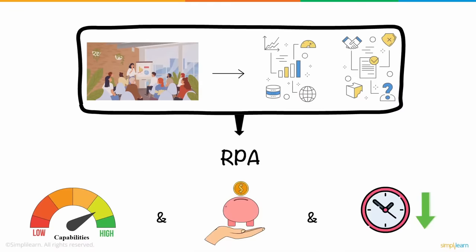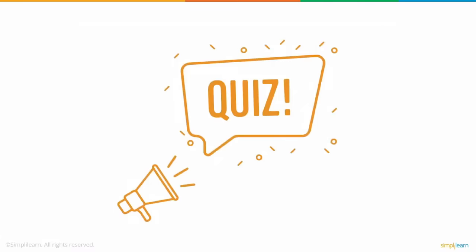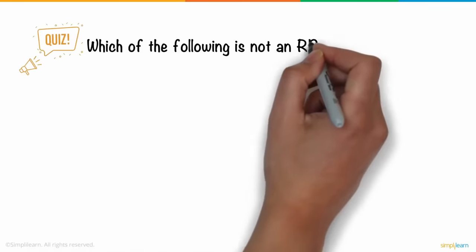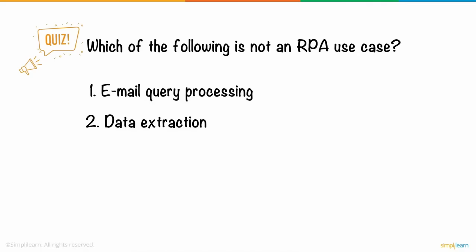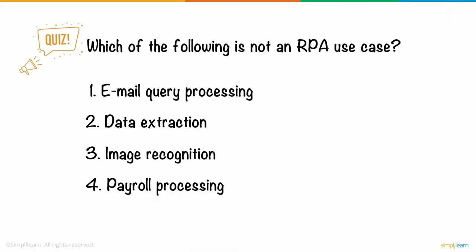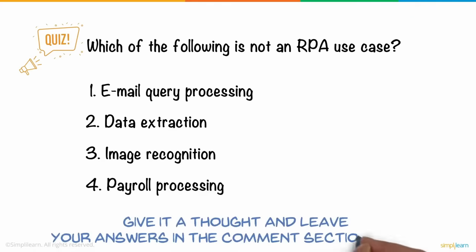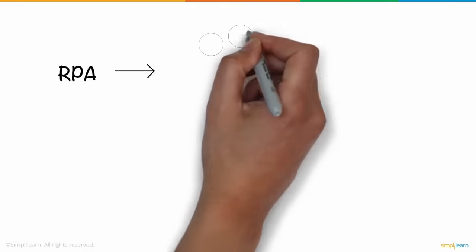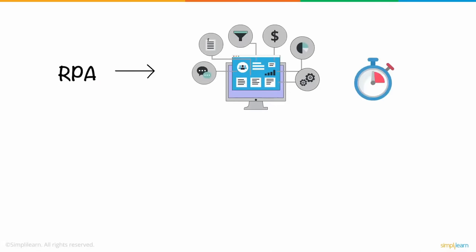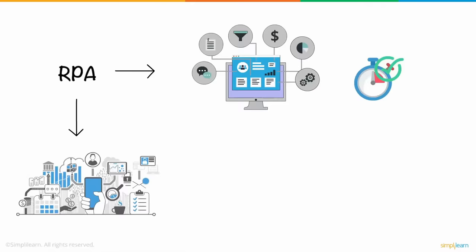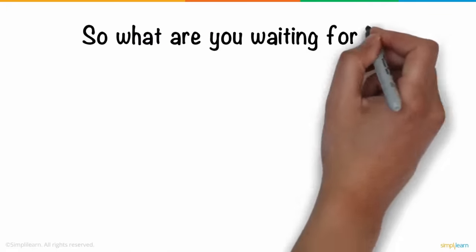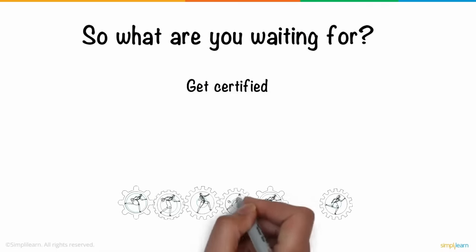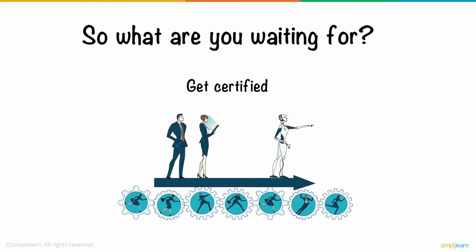Now that we've discussed what RPA is and isn't, here's a question for you: Which of the following is not an RPA use case? 1. Email query processing. 2. Data extraction. 3. Image recognition. 4. Payroll processing. Give it a thought and leave your answers in the comments section below. RPA offers the ability to automate business processes quickly and easily, paving the way for digital transformation. Get certified and become an RPA developer to build a bright future in the field of automation.